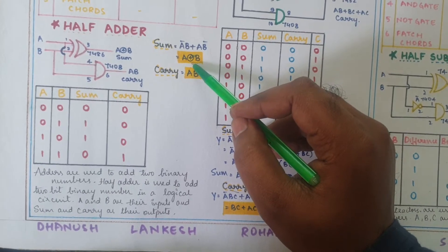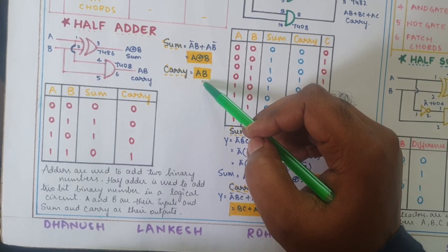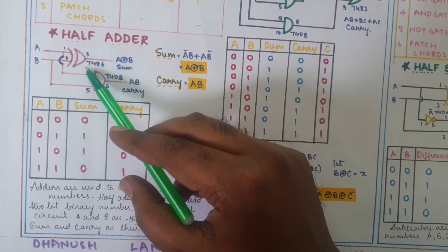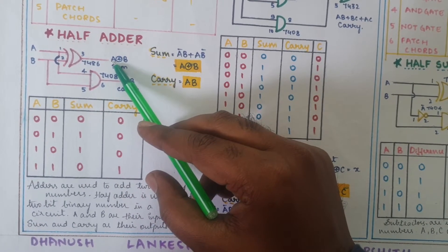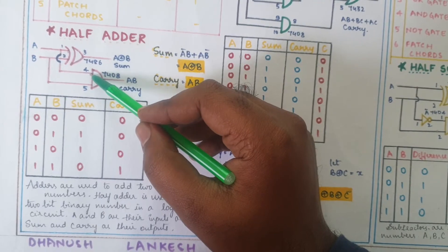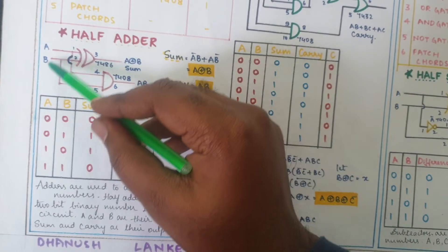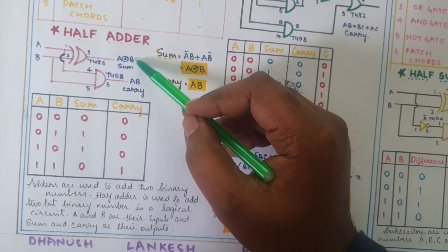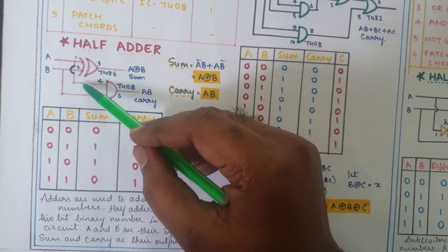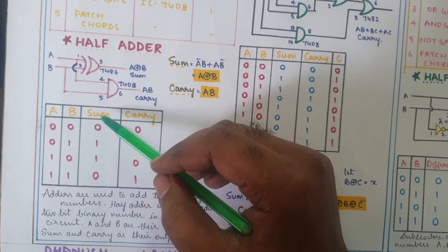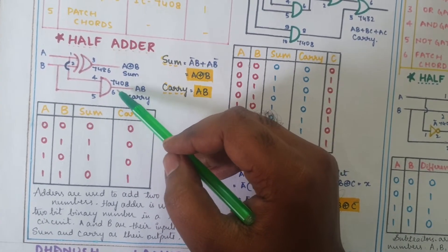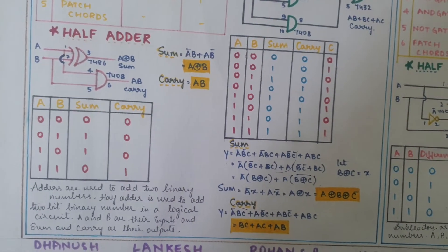These two equations tell us we need one XOR gate and one AND gate. The circuit uses XOR gate 7486 with inputs A and B, giving output A XOR B as the sum. The AND gate takes the same A and B inputs, giving output A·B as the carry. Pin numbers: XOR gate inputs are pins 1 and 2, output is pin 3; AND gate inputs are pins 4 and 5, output is pin 6 (or 1, 2, and 3). This is the complete half adder circuit.